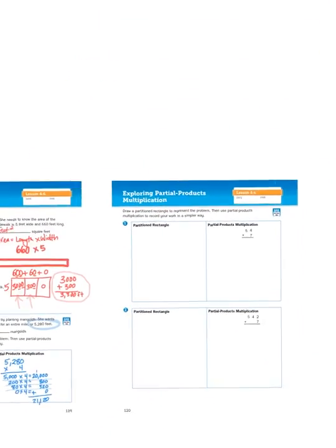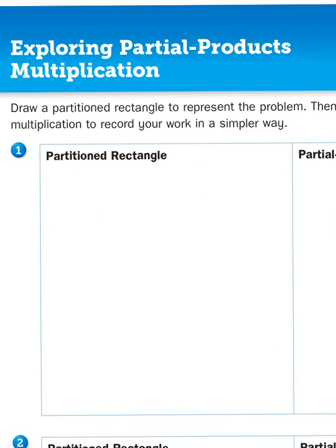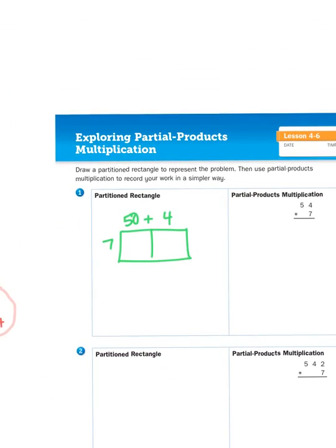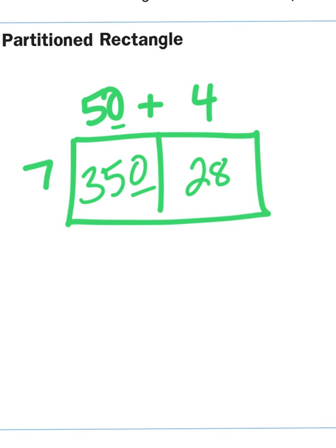So let's try a problem together. Problem number one. It says draw a partitioned rectangle to represent the problem. Then use partial products to record your work in a simpler way. So the problem here is 54 times 7. So as a partitioned rectangle, I would write 54, 50 plus 4, times 7. And I'm going to multiply 7 times 5, which is going to give me 350, or 35 tens. And then 7 times 4 is 28. Then I'm going to take 350 and 28 and add them together to give me 378. So that's my total.